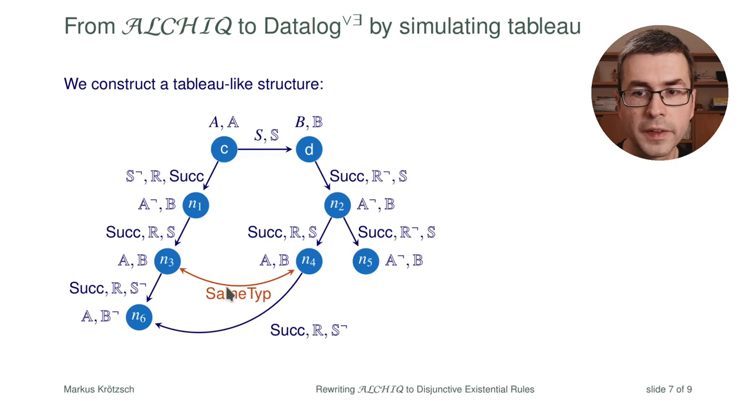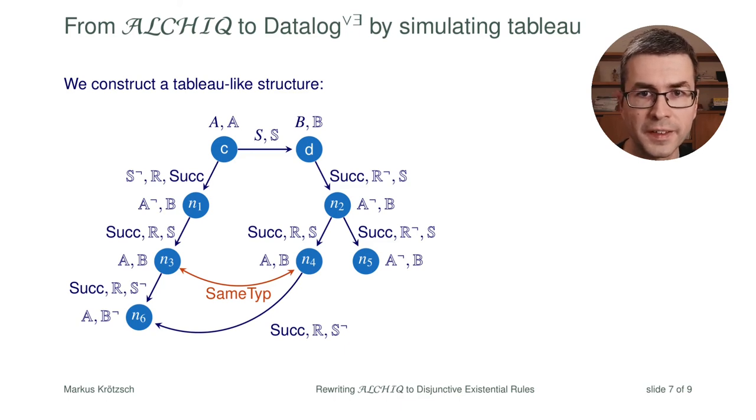When we apply an existential rule at this stage it will be detected that there already is a suitable element to satisfy the existential rule. And we will not apply a new existential rule or create a new element here. So in this sense what we do here is what is called the restricted chase. Summing up there are two important techniques here to ensure termination. One is to use the restricted chase where we check before we create something. The other one is to prioritize non-generating, non-existential rules so that we really know that things are of the same type and have the same successor before we even start constructing any new element.